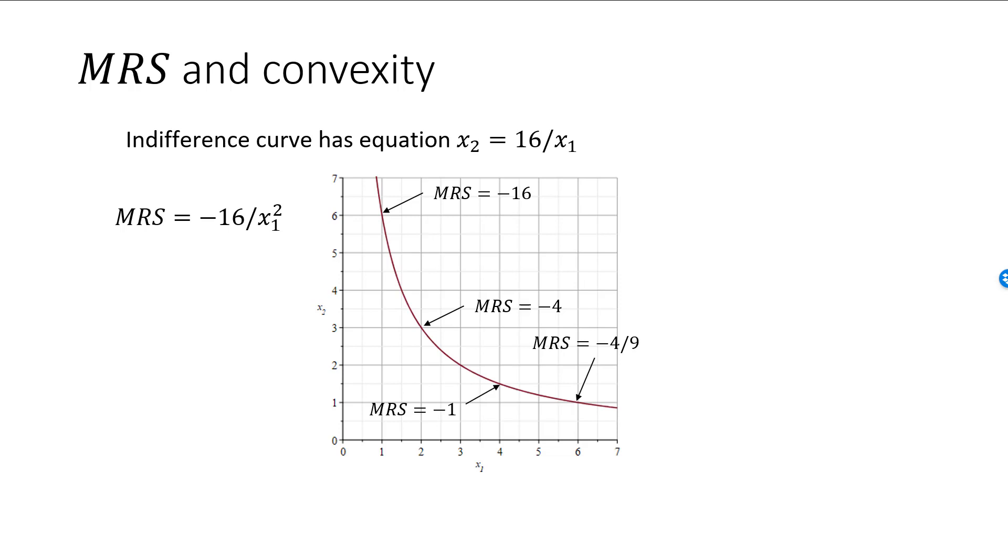Remember that a function is convex if the second derivative is positive. A positive second derivative means that the first derivative, or MRS in our case, is increasing. This is the case for this convex indifference curve.